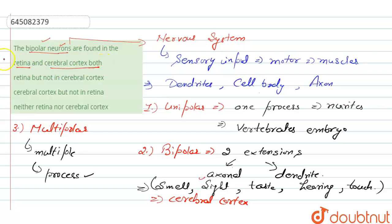This option is the right option for our question. Next option says retina but not in cerebral cortex—this is wrong because it is found in both. Cerebral cortex but not in retina is also wrong. Neither retina nor cerebral cortex is also wrong. So the right answer is option A only.